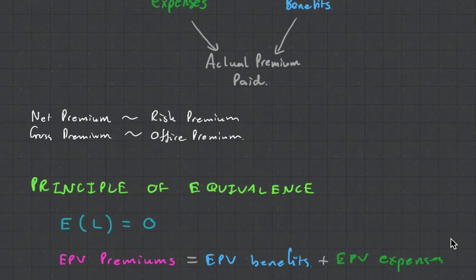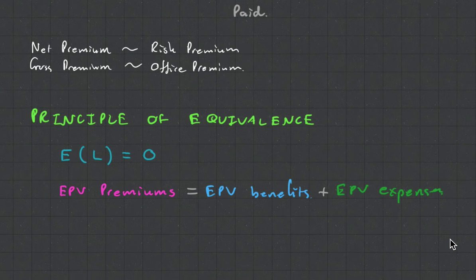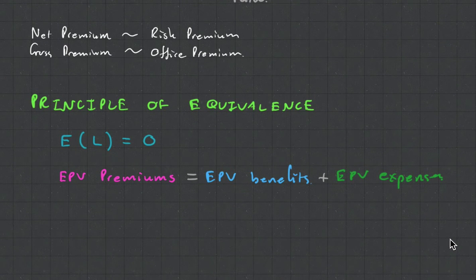Now, a very important principle is the principle of equivalence. What this says is that the expected value of the future loss must equal zero. And this happens when your expected present value of your premiums is equal to your expected present value of your benefits plus the expenses, also the present value.